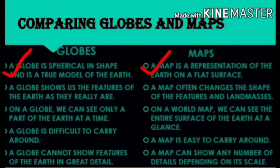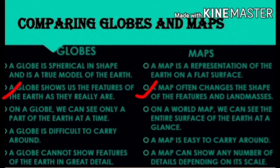The next topic is the comparison of globes and maps. The first difference is a globe is spherical in shape and is a true model of the earth, but a map is a representation of the earth on a flat surface. A globe shows the features of the earth as they really are, but a map often changes the shape of features and land masses.